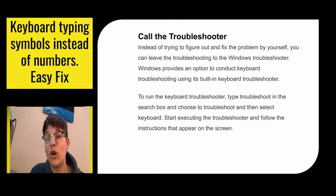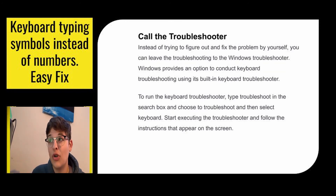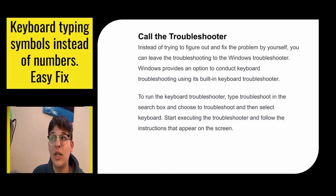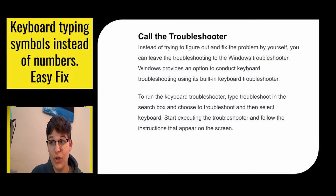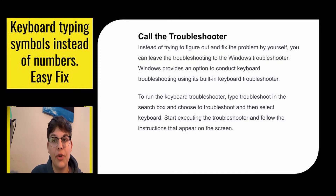Next you might have to run the troubleshooter. Instead of figuring this out on your own, you can leave it to the Windows keyboard troubleshooter. Windows provides a built-in keyboard troubleshooting option. To run it, type 'troubleshoot' into the search box, choose Troubleshoot, then select Keyboard. Start executing the troubleshooter and follow the instructions that appear on your screen.